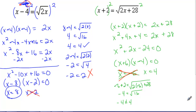Then if I try x equals 4, that one should work. That gives me 4 plus 2 equals the square root of 2 times 4, which is 8, plus 28. That's 6 equals the square root of 36, which is correct. So that is my solution. Extraneous solution there, and that's why we don't use them.